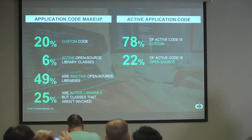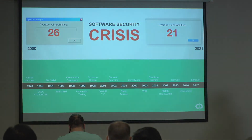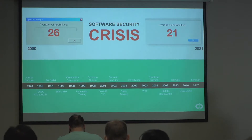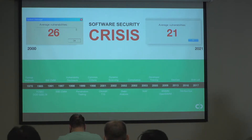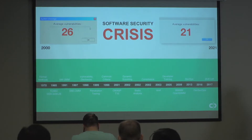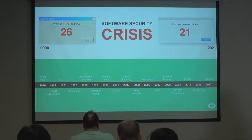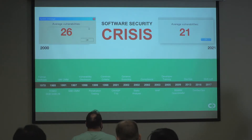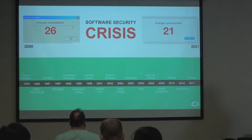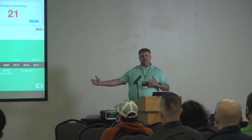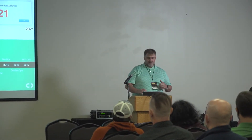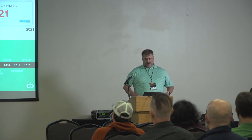We've tried many things along the way — the last 21 years. The OWASP Top 10 in the early 2000s really kicked off app sec. Way back then there were about 26 vulnerabilities per app on average, and today in 2021 there are about 21. That's not a very big change — about 20 percent in 21 years. It's going to take another hundred years to dwindle that down further. We're in what I call a software security crisis.